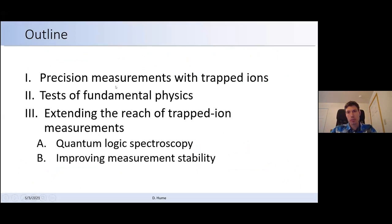So here's an outline. I want to just give an introduction to precision measurements with trapped ions. Here I'm really talking about clock type measurements and the kinds of tests of fundamental physics that have been done recently with those systems. And then I want to spend some time discussing how we're trying to extend the reach of these trapped ion measurements, both in terms of the kinds of atomic systems that are accessible for these measurements, as well as the stability and the accuracy that we're able to achieve with them. So I'll talk about some recent work related to both quantum logic spectroscopy, which is a key technique for enabling measurements on otherwise inaccessible systems, and work that we've done to improve measurement stability.